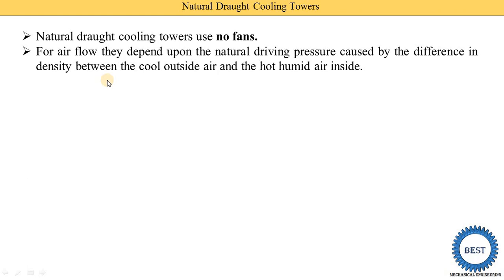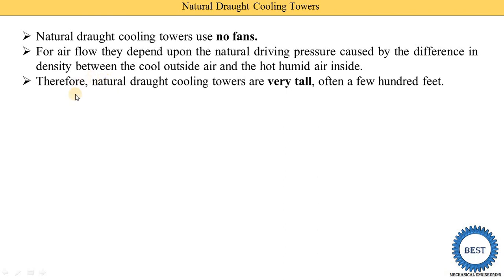Inside the cooling tower, hot humid air has low density and tends to move upward, while outside cool air has higher density. Due to this density difference, air circulation takes place. Therefore, natural draft cooling towers are very tall — a few hundred feet — compared to mechanical type cooling towers such as induced draft and forced draft cooling towers, because air circulation takes place naturally and requires a larger height.